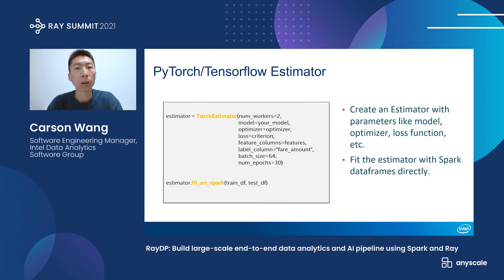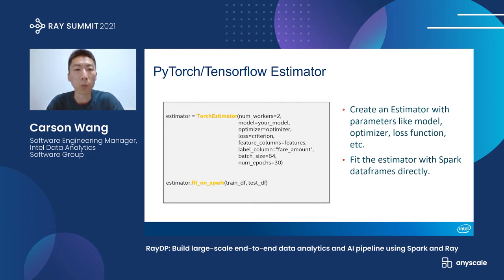Let's take a look at the estimator API. To do distributed training on Ray with a Spark DataFrame, the simplest approach is to use the PyTorch and TensorFlow estimator provided by RayDP. You can create a PyTorch estimator by specifying how many training workers you want to run, your model, optimizer, and loss function. Additionally, you can specify the feature columns, label column, batch size, and number of epochs. After that, you can directly fit the estimator using a Spark DataFrame, and we will take care of everything else and execute your distributed training on the Ray cluster.